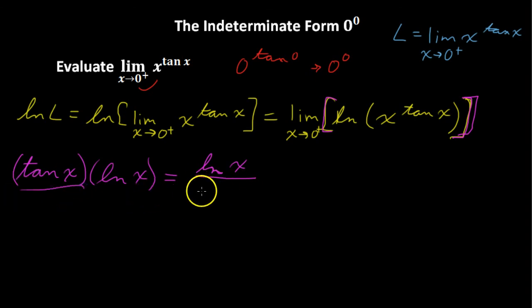and put it in the denominator. So the natural log of x divided by 1 over the tangent of x is the same as being multiplied by a tangent of x. I'm going to rewrite this tangent of x as the cotangent of x right now. So natural log of x over the cotangent of x.